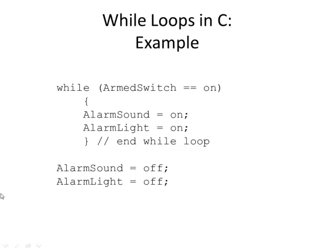Here's an example using a simple alarm system. A home security system has an armed switch — let's say it has a key that turns the switch on and off. While the armed switch is equal to on — remember, two equal signs means 'equals' in C — it's going to sound the alarm and turn on the light. You don't want to do that just once, because you have to be able to disarm the system. If the system is still armed, you want to keep repeating this process.